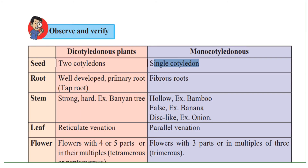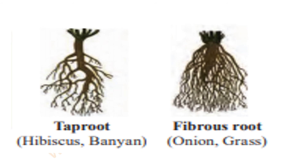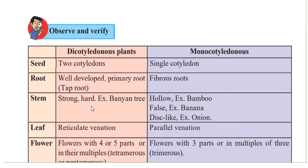Roots in dicotyledonous plants are well-developed primary roots — that is, the tap root system — with sub-roots coming out from the primary root, for example in hibiscus and banyan. Monocotyledonous plants have the fibrous root system, for example in onion and grass. The stem in dicotyledonous plants is strong and hard, for example the banyan tree. In monocotyledonous plants, the stem could be hollow (e.g., bamboo), false (e.g., banana plant), or disc-like (e.g., onion).